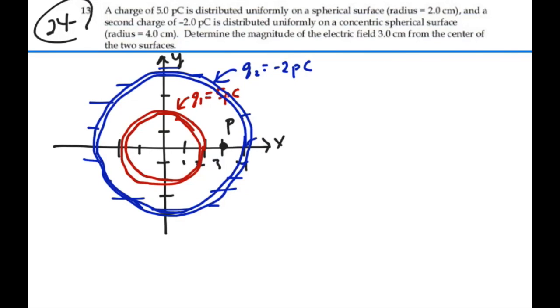Which means, basically, that there is no E field inside the shell due to that charge. Outside the shell acts like a point charge. Inside, there is no E field. So, for this problem, at point P, we can neglect this outer shell of negative charge because we are inside that shell.